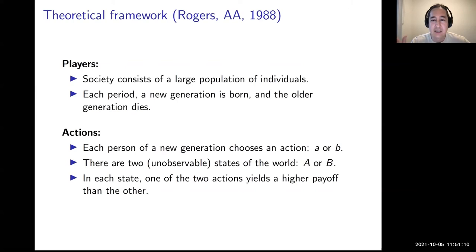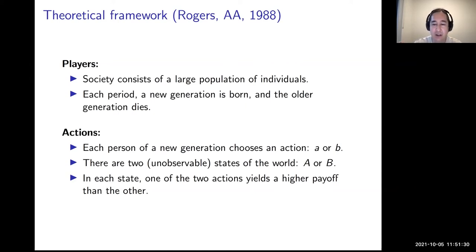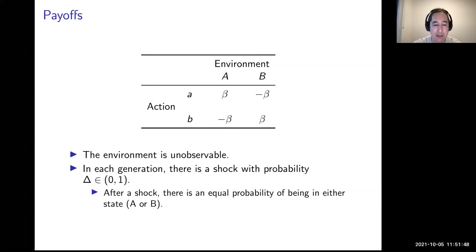In the model, a society consists of a large population of individuals. Each generation, a new generation is born and the older generation dies. There are two actions each period — action A or B — and two states of the world, Capital A and Capital B. In one state, one action is optimal. In environment A, action small-a is optimal. You can't observe the environment, and with some probability delta there's a shock each period.